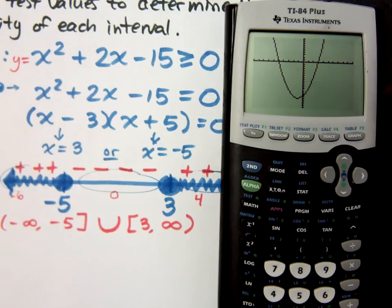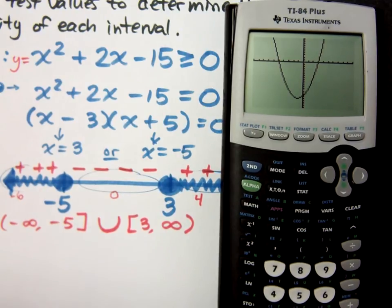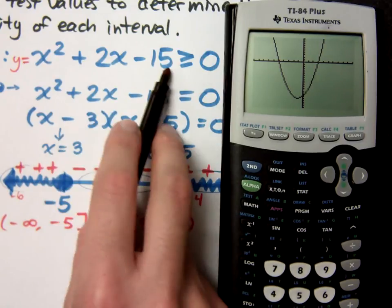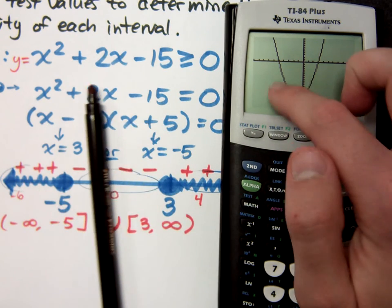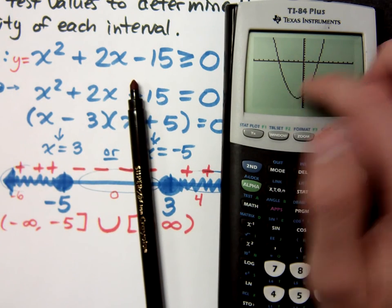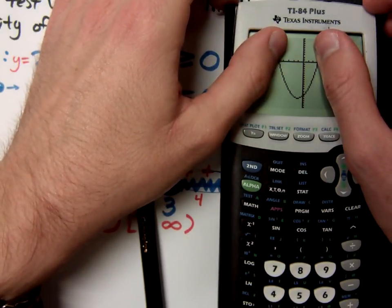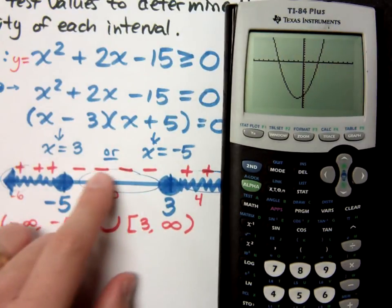Now, what if I were asking this to be less than? If I wanted to know where is this less than or below 0? It would have just been this one interval right here which would have been all of this stuff between negative 5 and 3. And that would have matched up with these guys being negative.